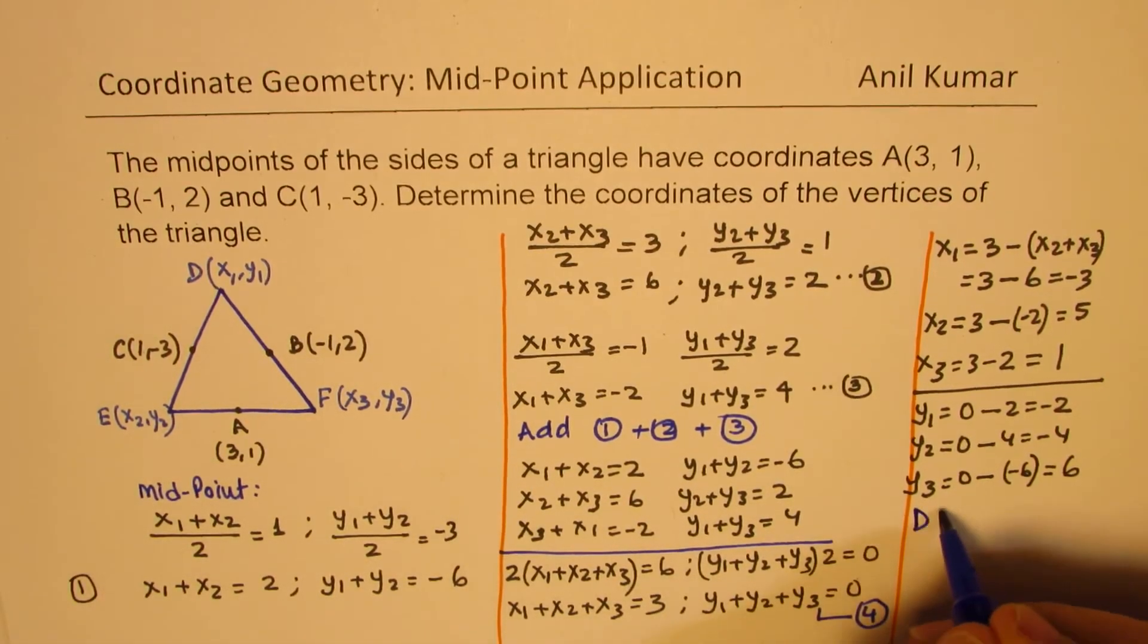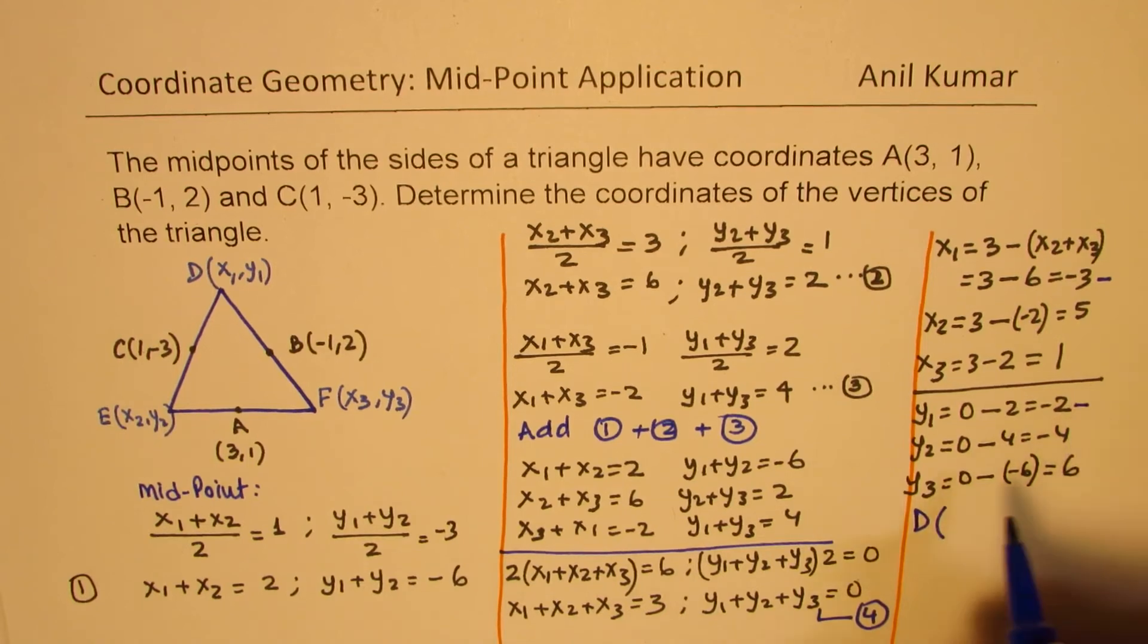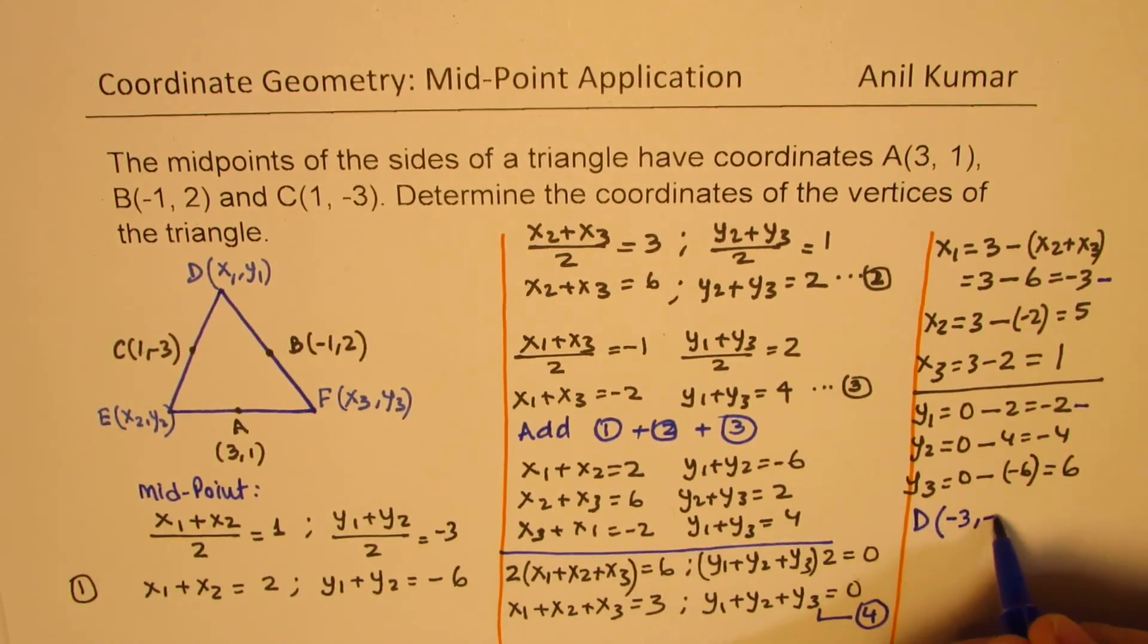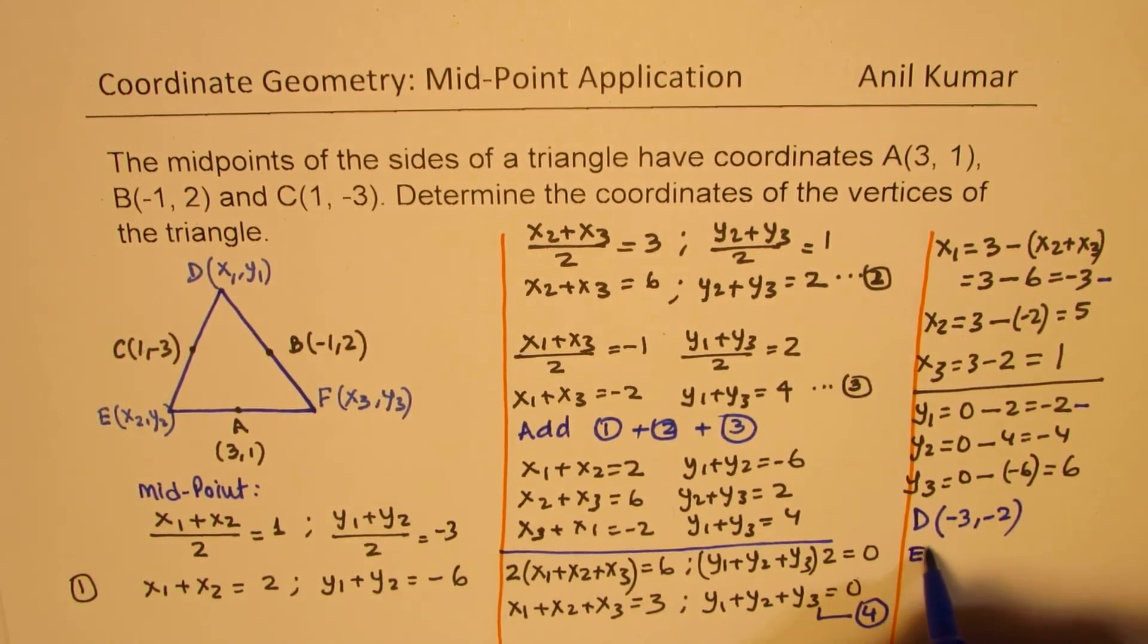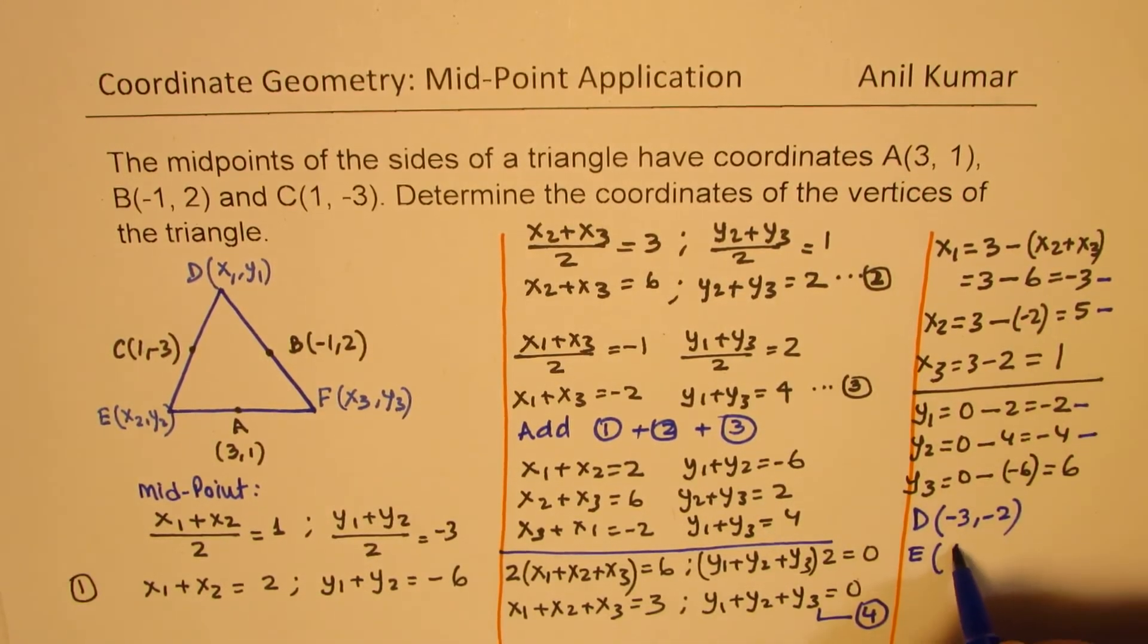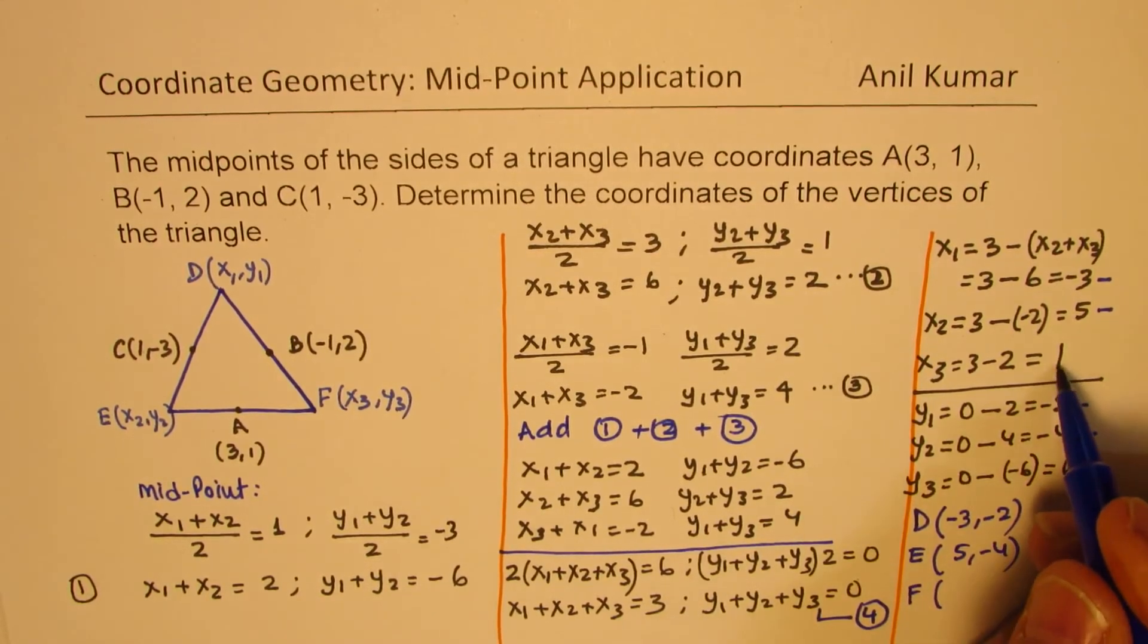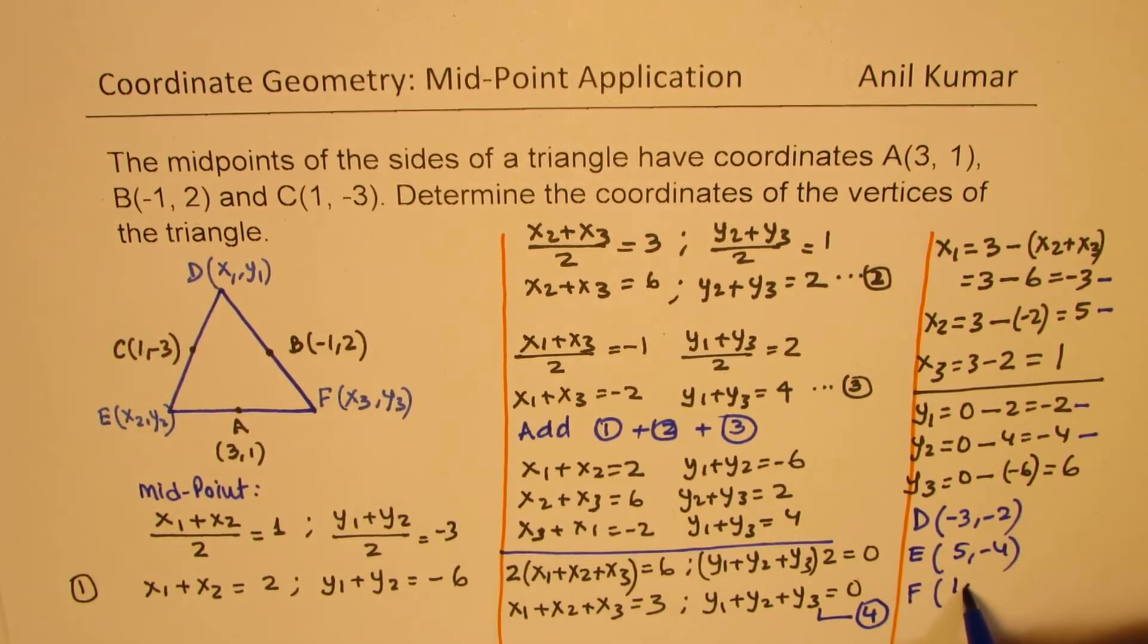So now we can easily write down our coordinates. D is x₁, y₁. So it is (-3,-2). E is x₂ and y₂. So it is (5,-4). And F, which is (1,6). So that is how we get all the points. Does it make sense to you?